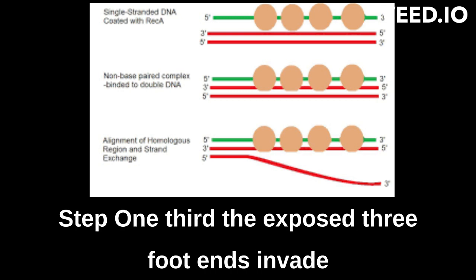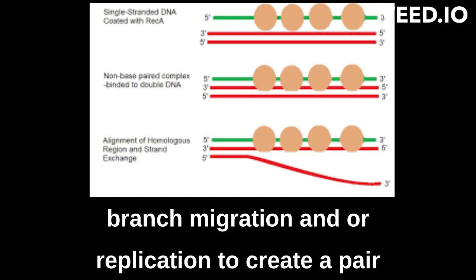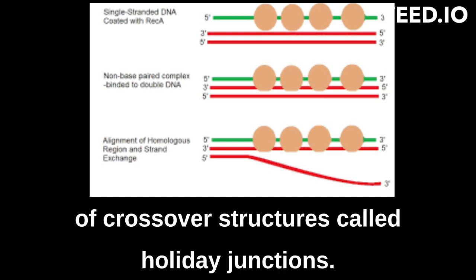Third, the exposed 3' ends invade the intact duplex DNA. This is followed by branch migration and/or replication to create a pair of crossover structures called Holliday junctions.